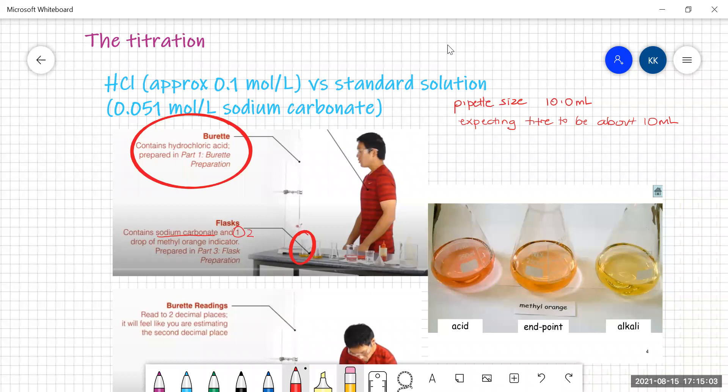Now methyl orange, because you're putting it into sodium carbonate as an alkali, it will have a yellow colour. Its acid colour is a pink colour.